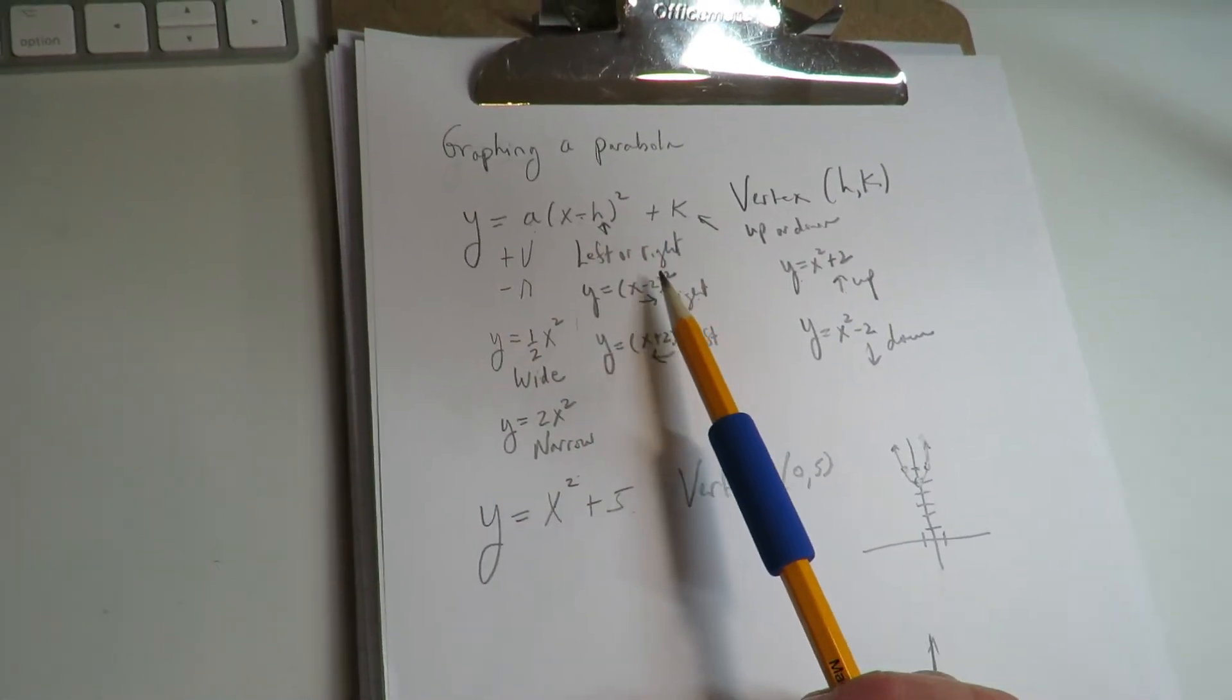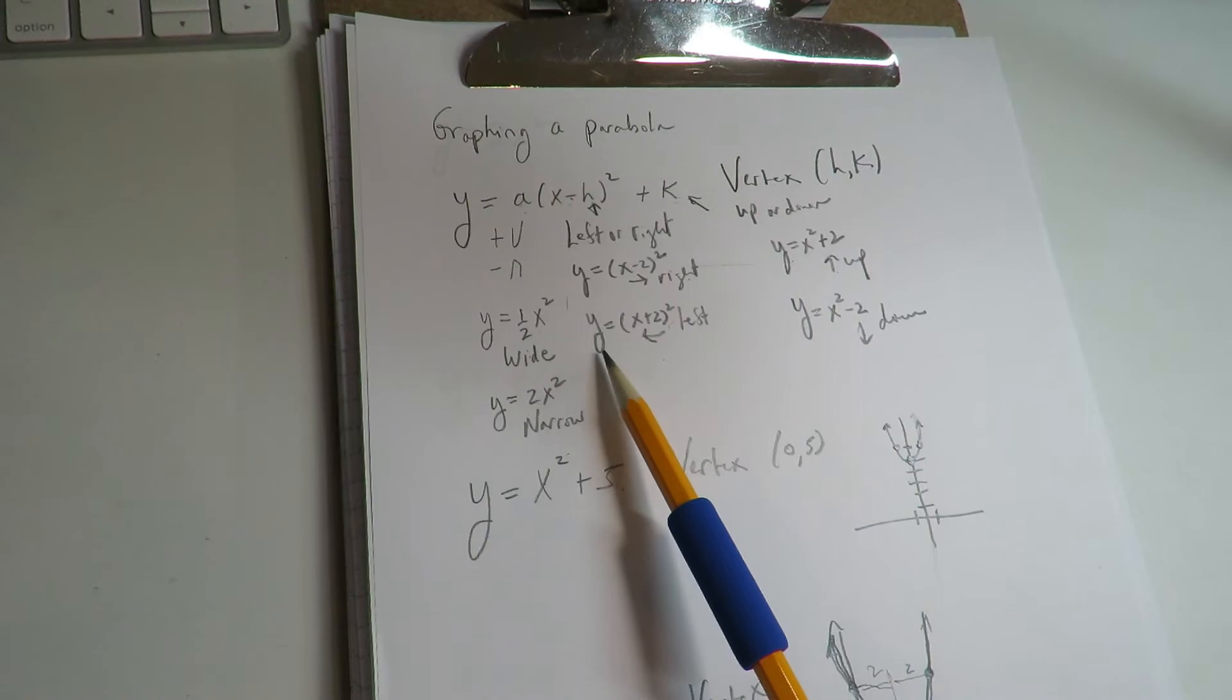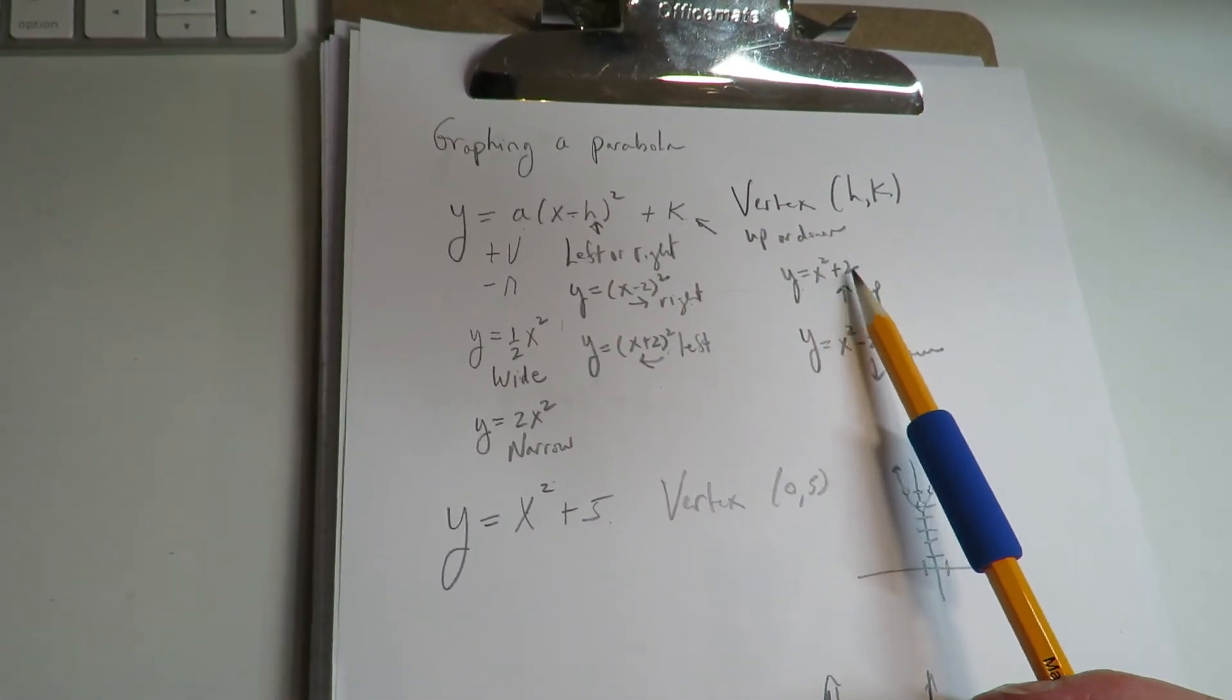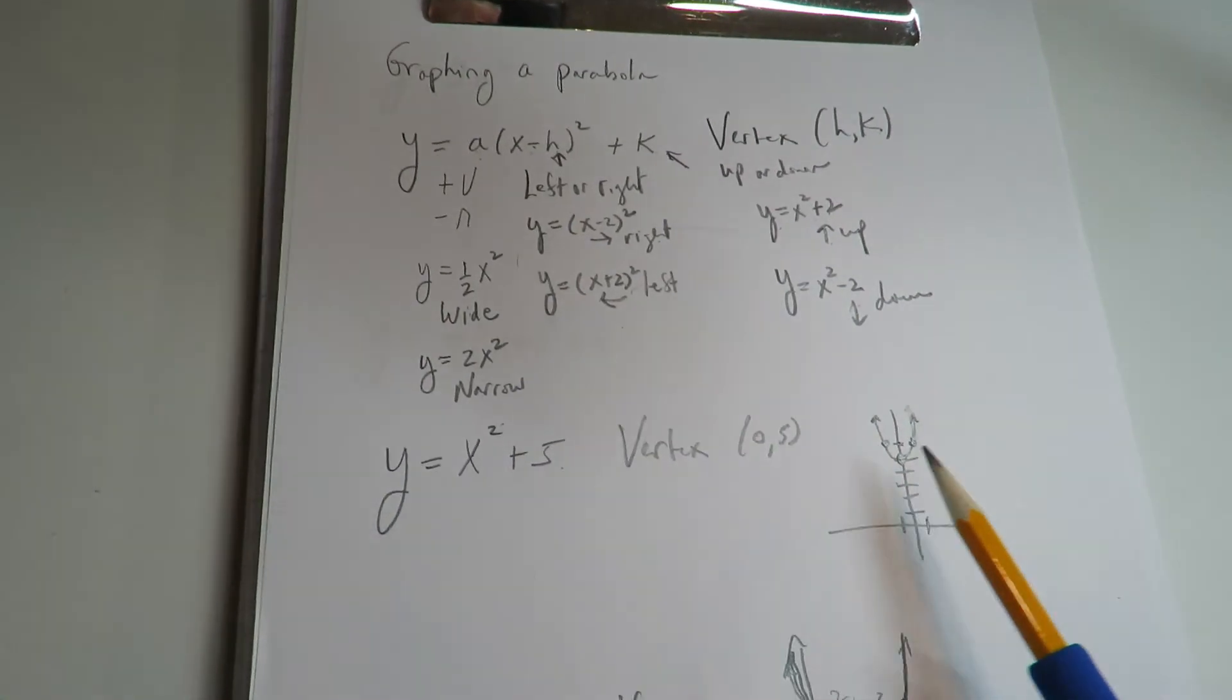Again, h is left or right. If it's negative, you're going to the right. If it's positive, you're going to the left. The value on the end is your up down. If you're positive, you're going up. If you're negative, it's going down.